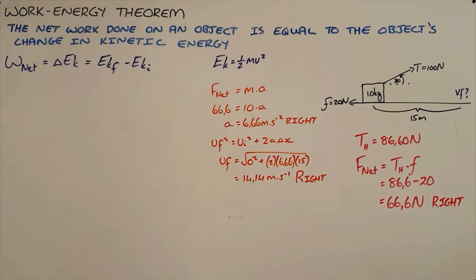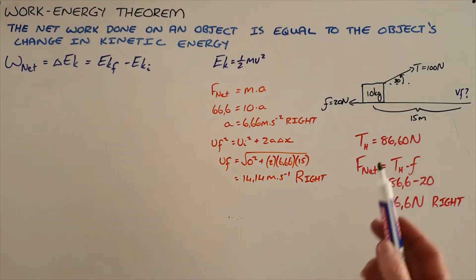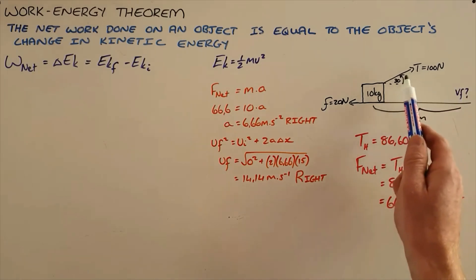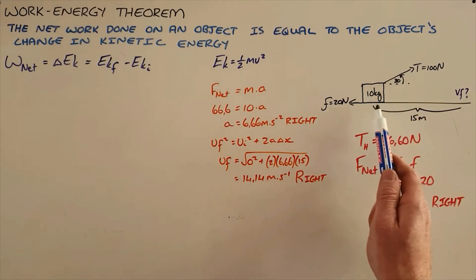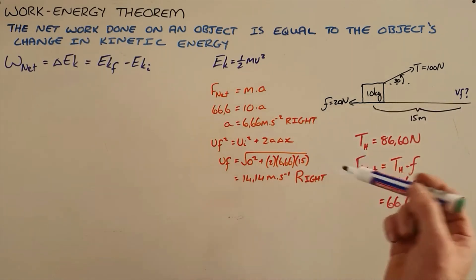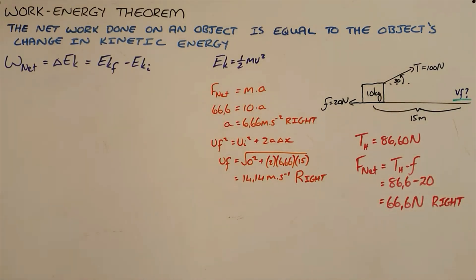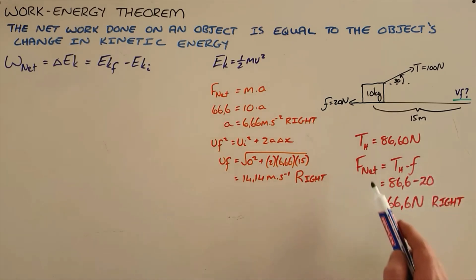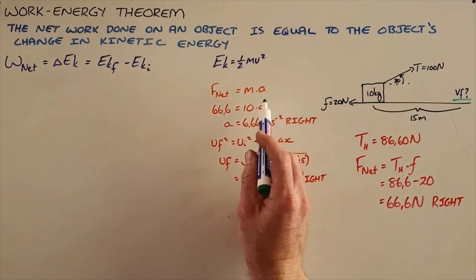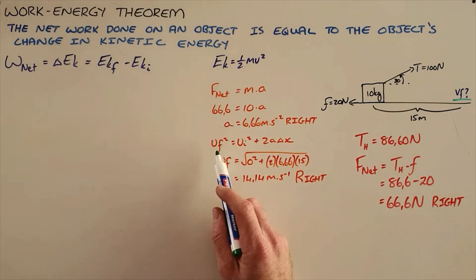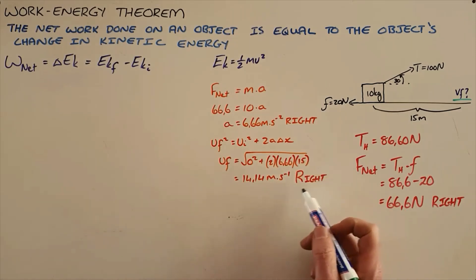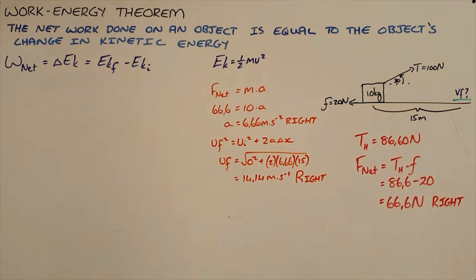Normally we would use Newton's laws and equations of motion to relate a force to an object's motion. For example, with a tension force of 100 newtons at 30 degrees on a 10 kg object moving 15 meters with a 20 newton frictional force, we would calculate the horizontal component of tension, then the net force, then use Newton's second law for acceleration, then an equation of motion — arriving at a final velocity of 14.14 m/s to the right.